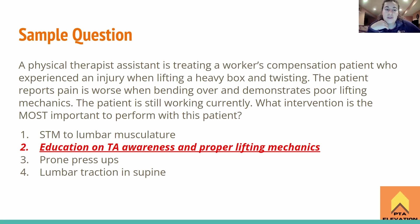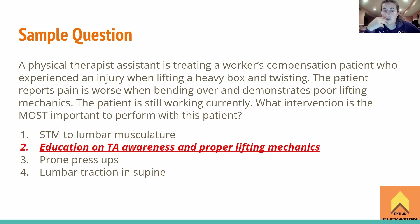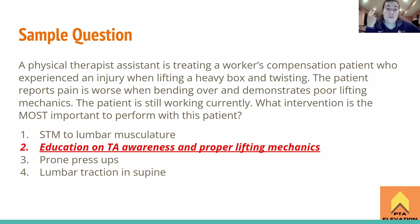Number one is incorrect — soft tissue massage might help if it were a muscle strain, but looking at the mechanism of injury with the lifting, bending, and twisting, plus pain worse with bending, we're thinking disc herniation. Number three — prone press-ups — is the most correct wrong answer. You would definitely want to do this with this patient since it's acute and may help get it back into place, but it's not as good as number two. Number two teaches the patient to fish rather than just applying a band-aid.